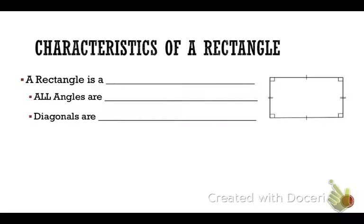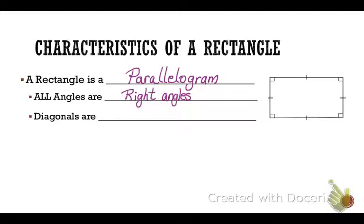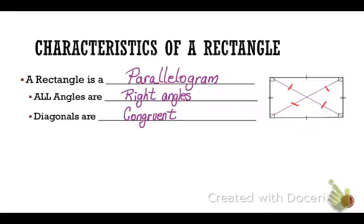The characteristics of a rectangle — in addition to all the characteristics of a parallelogram — are that all angles of a rectangle are 90 degrees; they're right angles. The diagonals of a rectangle not only bisect each other, they are congruent. Write these down and memorize them.